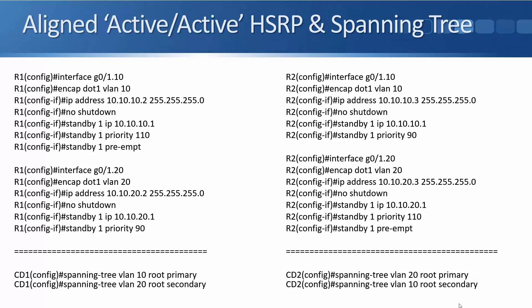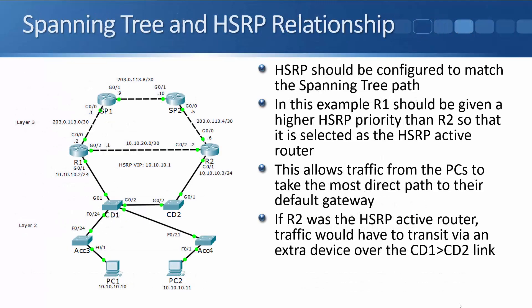On my switches, on core distribution CD1, I've set spanning tree VLAN 10 root primary and spanning tree VLAN 20 root secondary. The other way around on CD2 — spanning tree VLAN 10 root secondary. So R1 will be selected as the active HSRP gateway for VLAN 10, and CD1 will be selected as the root bridge with spanning tree. Going back to the diagram, all traffic for VLAN 10 is going to go up and down the left path via CD1 and R1.